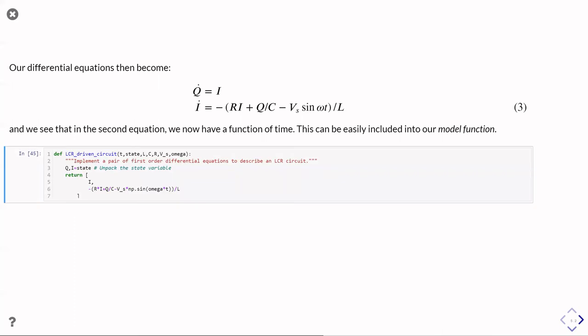That's very easy to be included in our model function. We just simply add that sine term in and we pass omega, which is the angular frequency, times time. So we've added one additional parameter, constant parameter to our problem, which is the frequency of the sine wave source.